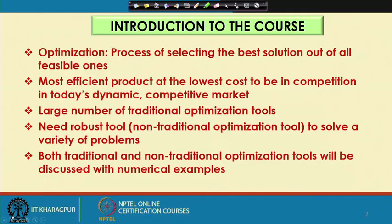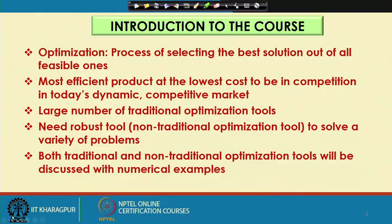To get the robust optimization tools, some non-traditional tools for optimization have been proposed. To develop the non-traditional tools for optimization, we try to copy everything from the nature. If you see the literature, we have got a few non-traditional tools for optimization. In this course, I will be discussing the working principle of traditional and non-traditional optimization tools with some numerical examples.